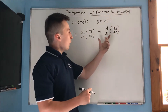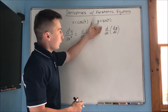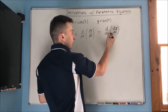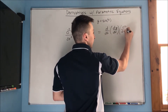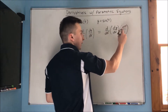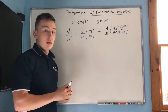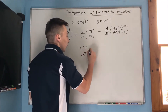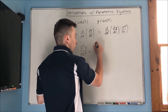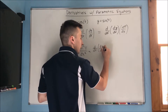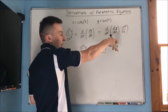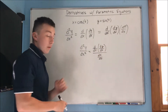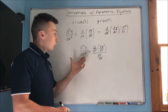We need to rephrase the derivative with respect to x as a derivative with respect to t. If we take the derivative with respect to t of dy/dx, then multiply by dt/dx, the dt cancels out and we're left with d/dx — which is exactly what we want. So the second derivative equals the derivative with respect to t of dy/dx, all over dx/dt.